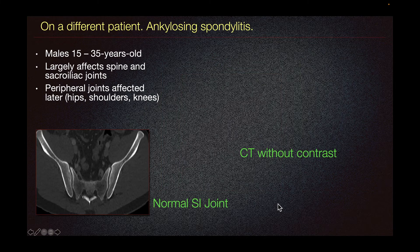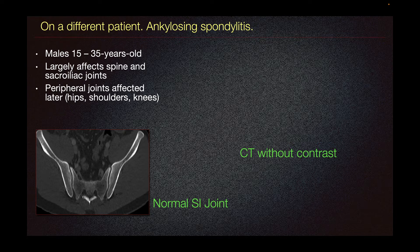This is a different patient with ankylosing spondylitis. Ankylosing spondylitis typically affects males 15 to 35 years old and largely affects the spine and the sacroiliac joint. The peripheral joints are affected later, including the hips, shoulders, and the knees.